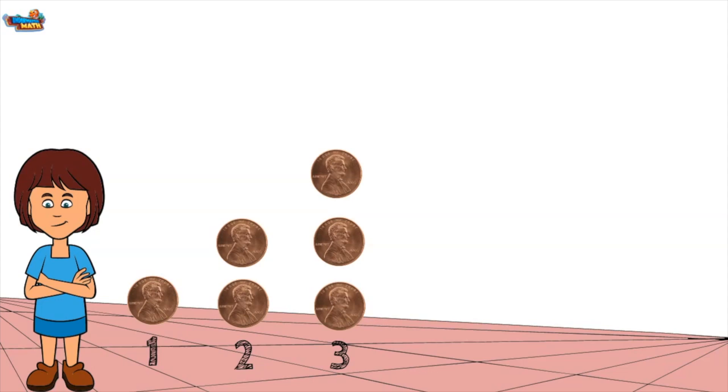Patterns can also be represented with money. Here is a group of coins. I am going to find the value of each of the groups of coins. Group 1 is 1 cent, the second group is worth 2 cents and the third group is worth 3 cents.